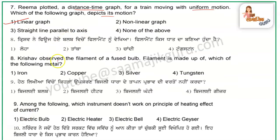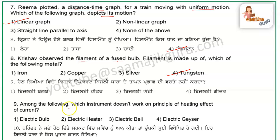The next question: Krishav observed the filament of a fused bulb. The filament, which is made of metal — it is made of tungsten. So the fourth option is correct.